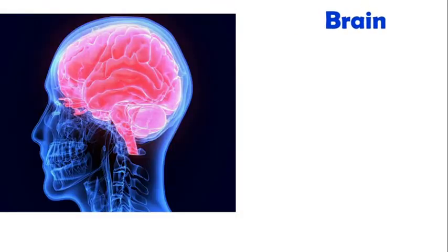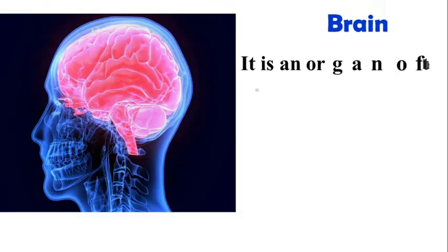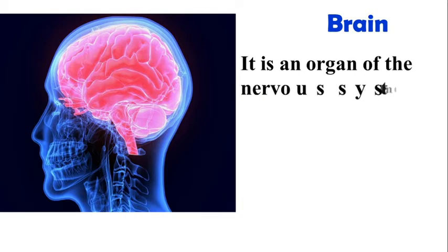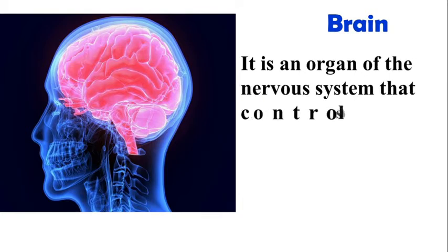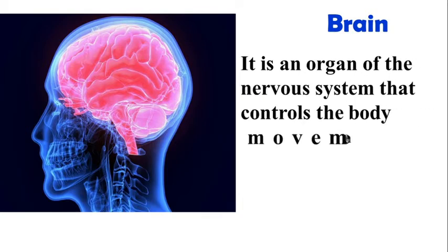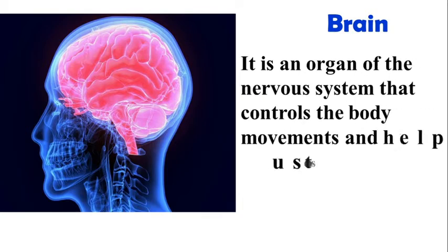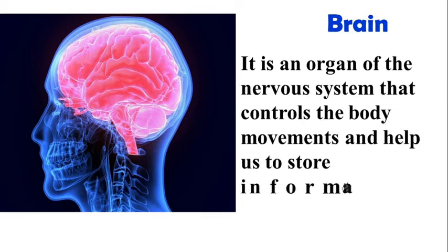Brain: It is an organ of the nervous system that controls the body movements and helps us to store information in our memory.